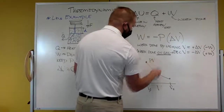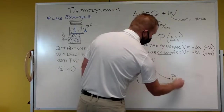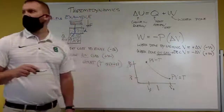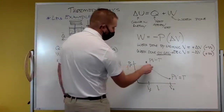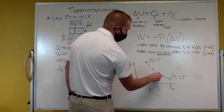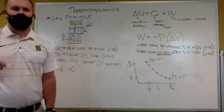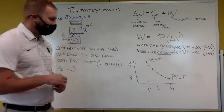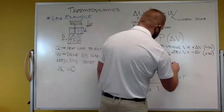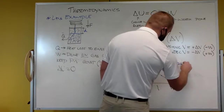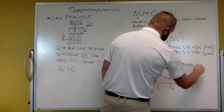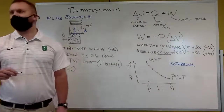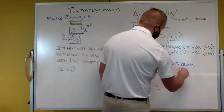PV initial and PV final both equal the same T — they're the same thing. Every position on the curve has the same P times V product. This situation is called isothermal — what we keep constant in this case is temperature.